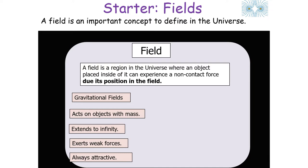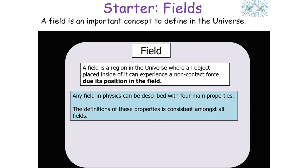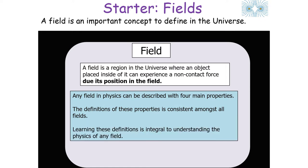The gravitational field acts on objects with mass, extends out to infinity, exerts weak forces, and always produces an attractive force. Any field in physics can be described with four main properties, and these definitions are consistent across gravitational, electrical, and magnetic fields. Learning these definitions is integral to understanding the physics of any field.